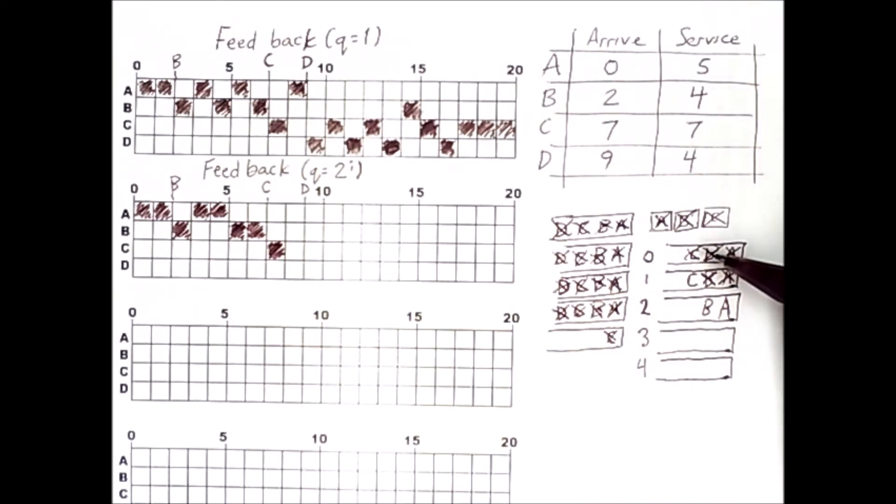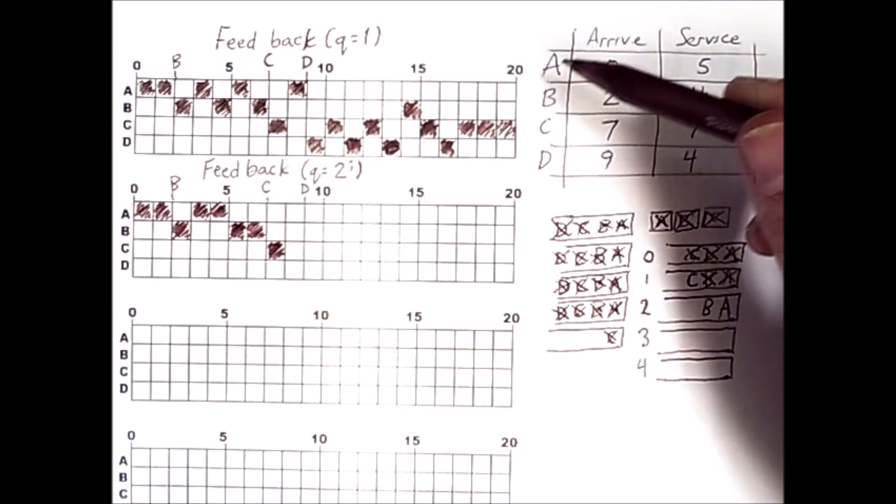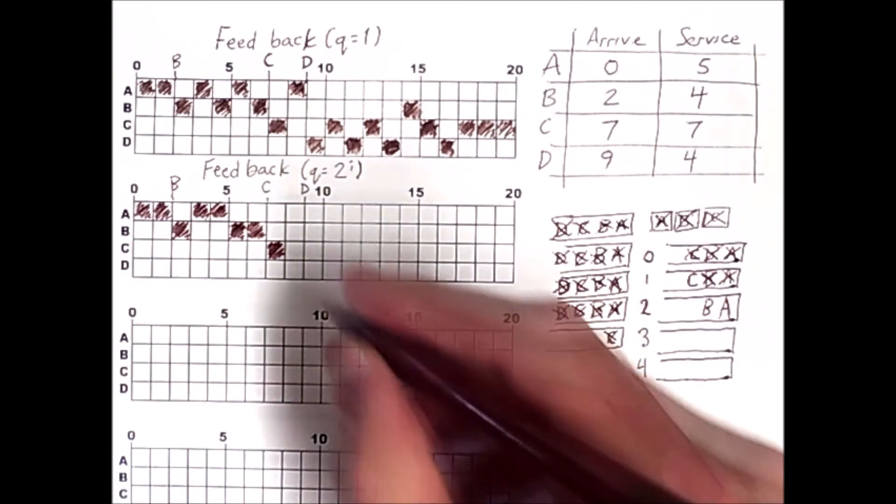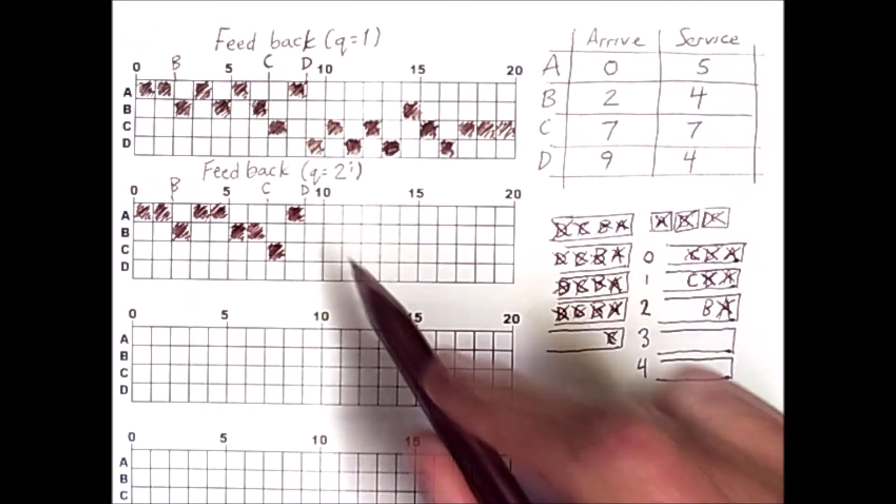Now despite the fact that C is in the queue with the lower number and would otherwise be able to go next, C was just on the processor. So we instead let A execute next. So A executes. And it's in now the queue with the number 2. So it would get to run for 2 to the 2 units for 4. But that is more than A will need. Its service time is 5. It's already run for 4 units. So we just run for 1 additional unit. And A is done. And now D shows up. So we'll add D here.